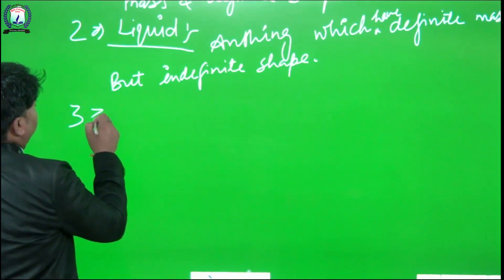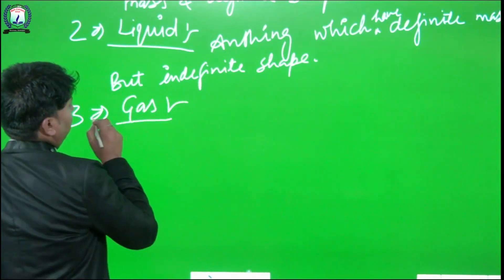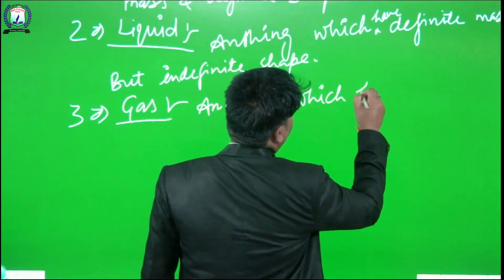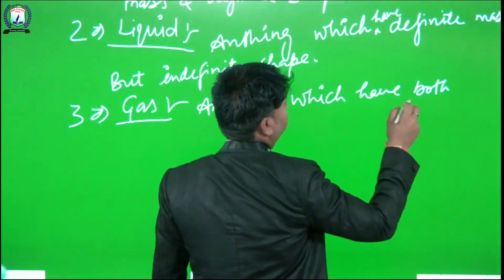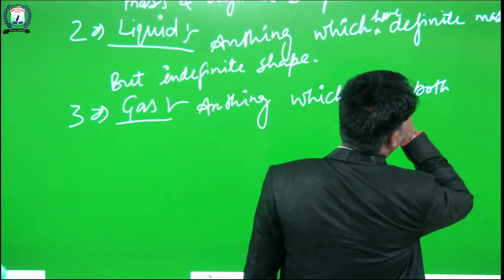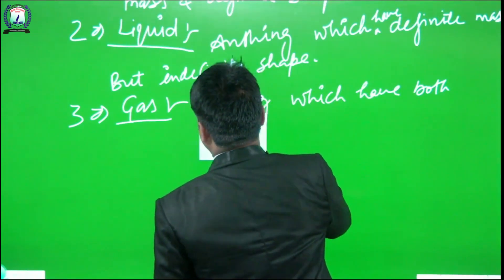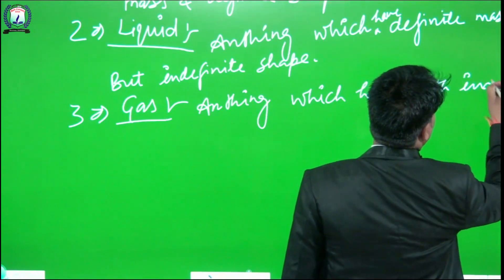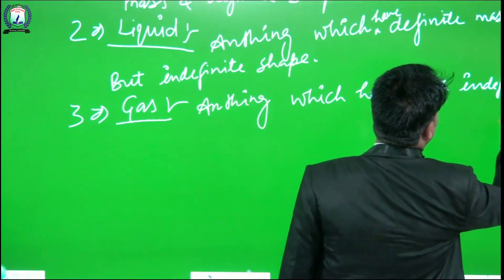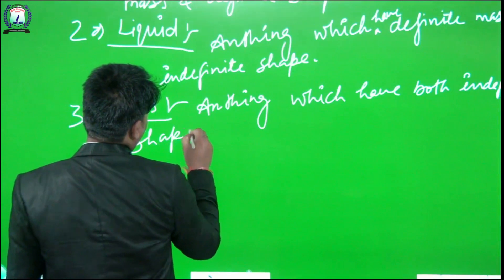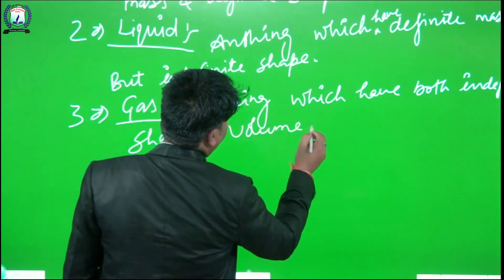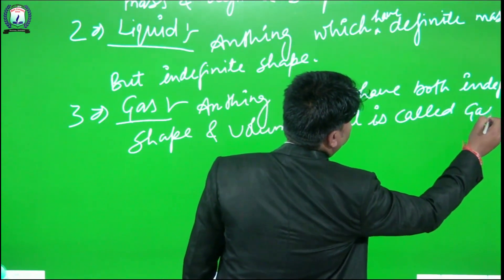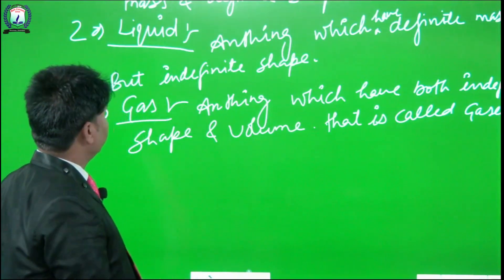Now we come to the next topic — gas. Any material which has both indefinite shape and indefinite volume is called gas.